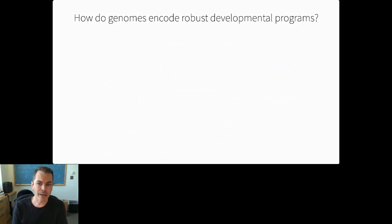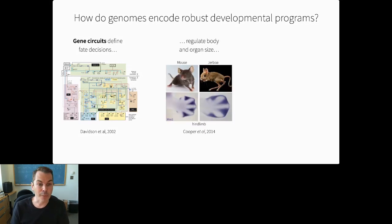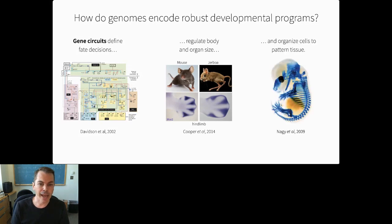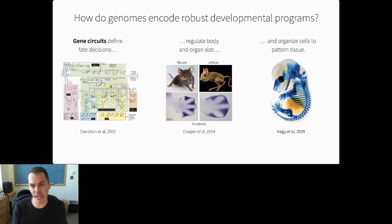It's widely believed that the strategy genomes use is that regulatory genes are organized into circuits full of positive and negative feedback loops, and that these circuits drive cell fate decisions and generate cell types in the right proportions, make organs and limbs of the right size, and allow cells to self-organize into intricate patterns in a robust way. Figuring out how these circuits are wired is painstaking work in developmental genetics, and in my lab we've been applying new tools in single-cell genomics to map out these circuits.